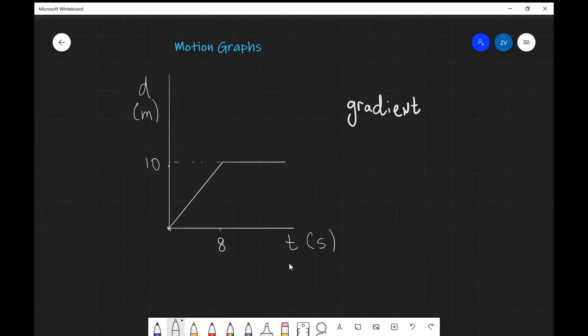You can see that this graph here consists of two features. Firstly, we can see that the displacement is increasing linearly up until about 8 seconds, and after 8 seconds the object remains with the same displacement from the origin, so that will mean that the object will be stationary.